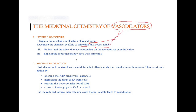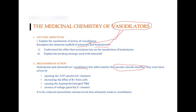So quickly, the mechanism of action. Hydralazine and minoxidil are both vasodilators, and they mainly affect the vascular smooth muscles. The way they exert their action is by opening of ATP-sensitive potassium channels. When the potassium channels are open, this leads to an increase in the efflux of potassium from the cells, which causes hyperpolarization of vascular smooth muscles, and then that leads to the closure of voltage-gated calcium channels.